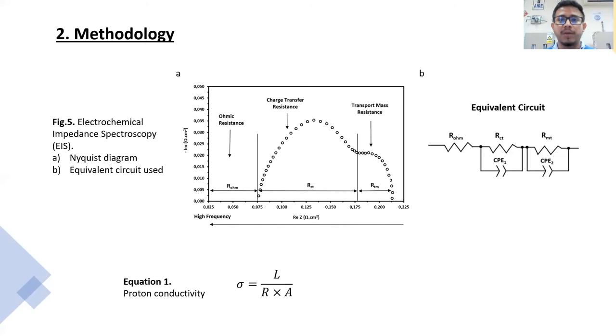After that, with the values of ohmic resistance we proceeded to calculate the proton conductivity using equation 1 shown below, where L is the membrane thickness, R is the ohmic resistance, and A is the affected area of the membrane.